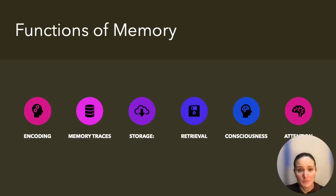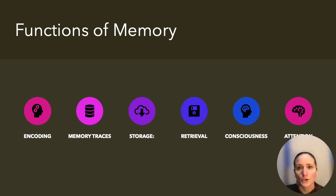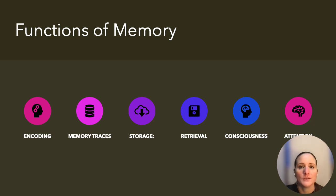The functions of memory. Encoding is inputting information into memory in the form of memory traces. Memory traces are codes that are stored as information in the memory. Storage is where information is retained in your memory. Retrieval is the ability to recall and output information that's stored in memory.